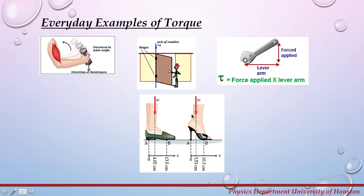If you set your axis of rotation to be at point A, you will have two forces producing torque on your foot: the gravitational force — the weight of the person — and the force at point B. Since in the high heels case the force at point B has a higher magnitude, the torque produced by this force will be higher than in the flat shoe case. This is the reason your feet hurt when you wear really high heels.